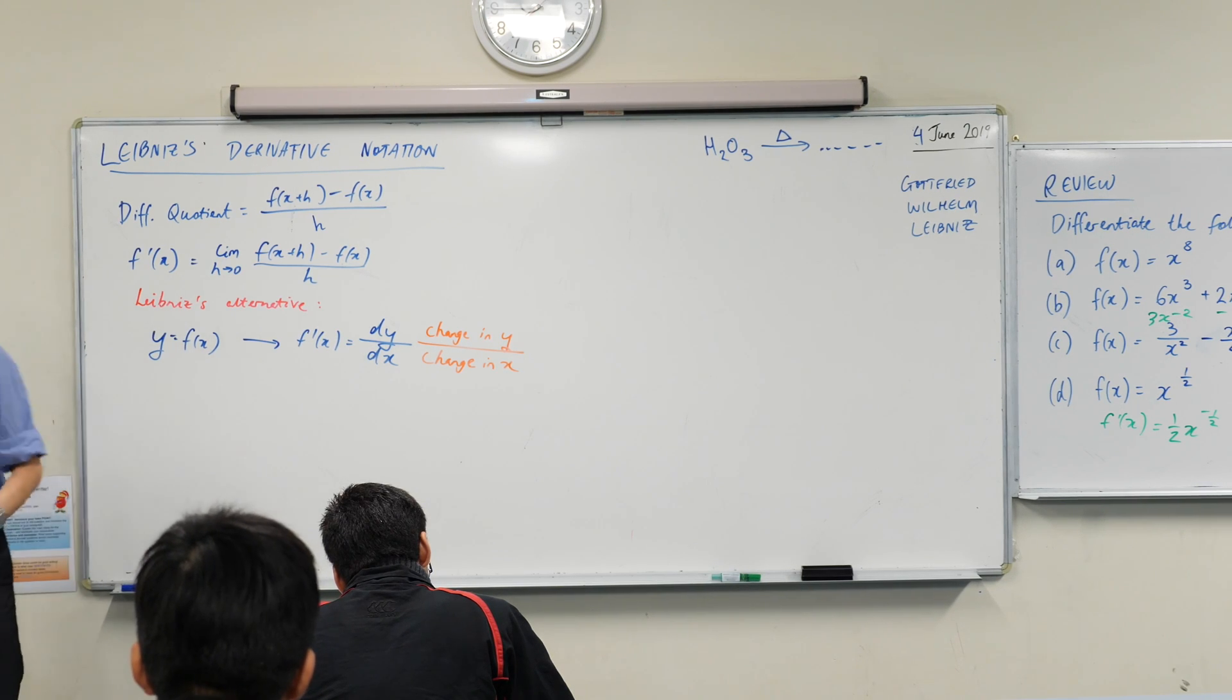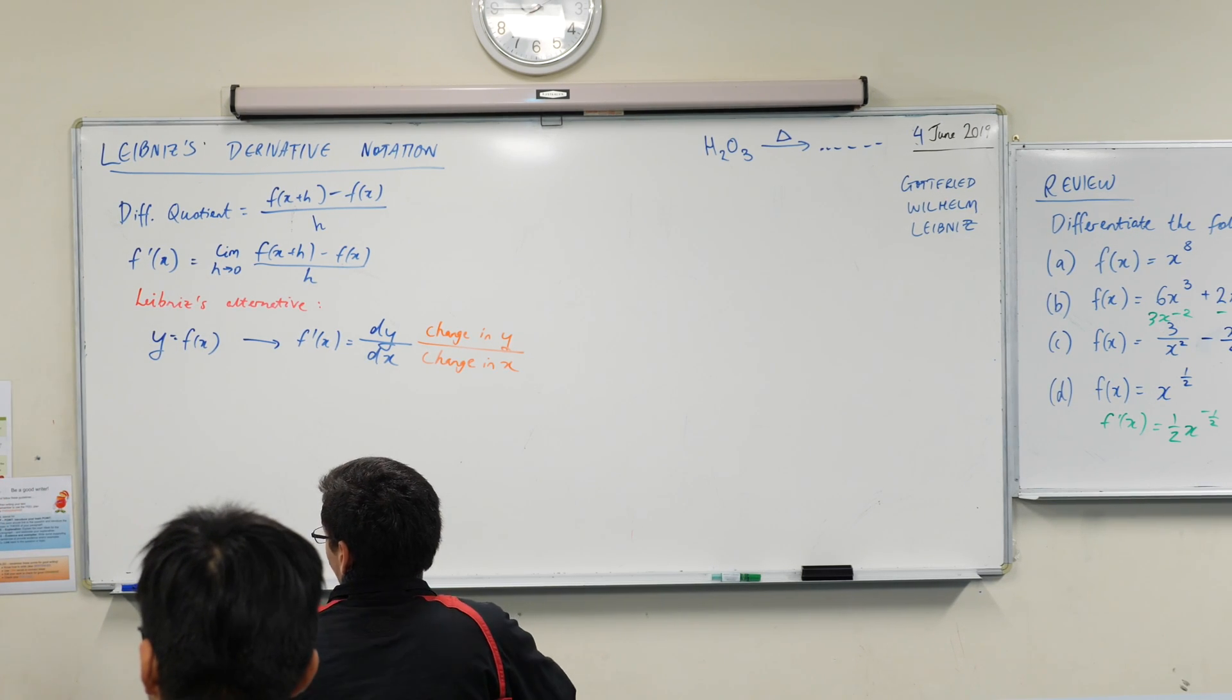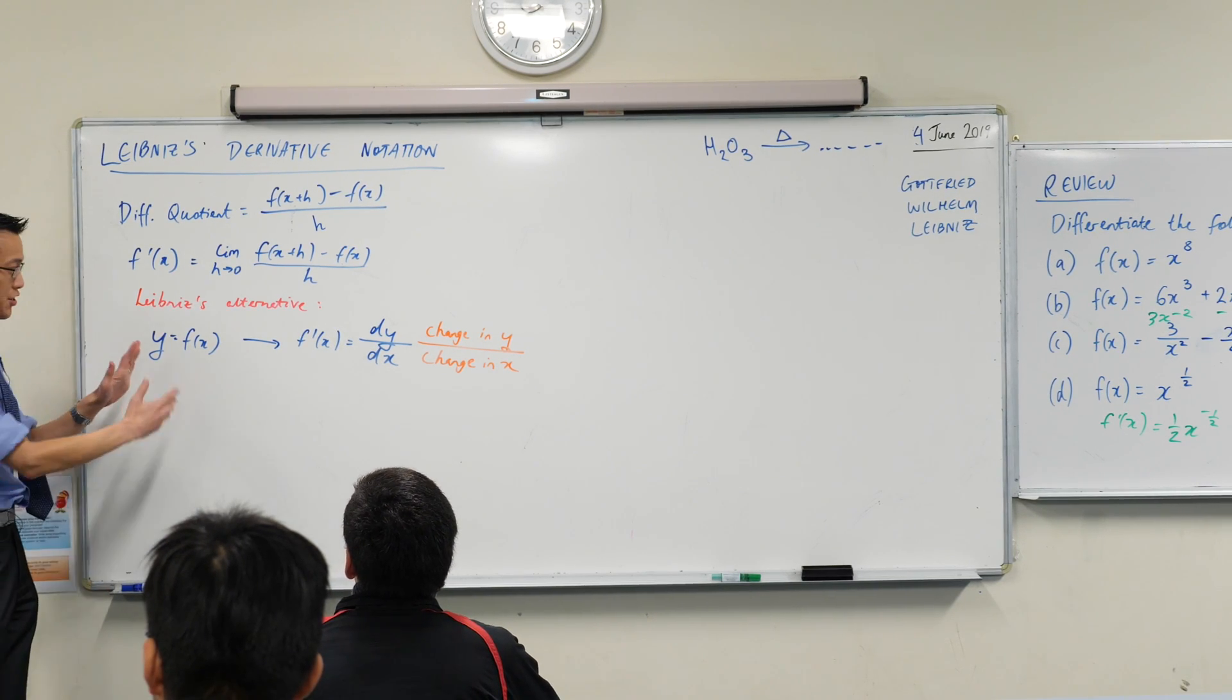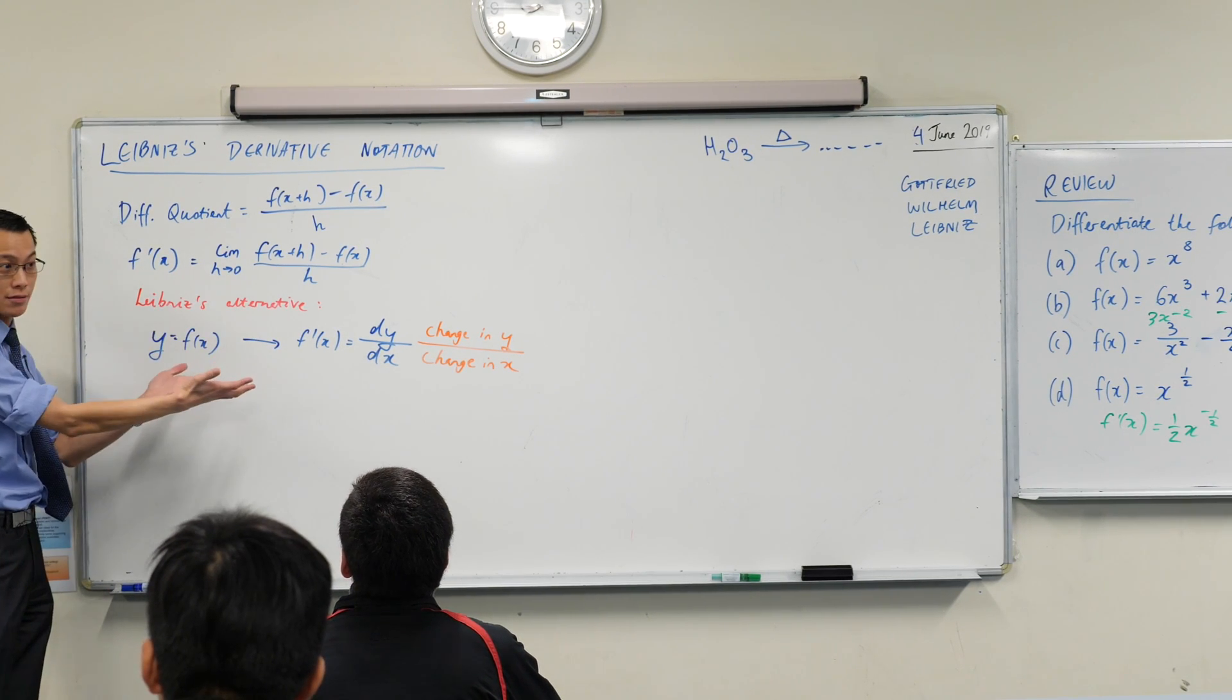Now, I want to talk us through... I've got a list written here, right? I've got one, two, three. I've got three big advantages to Leibniz's notation.